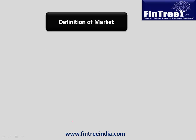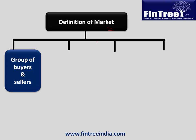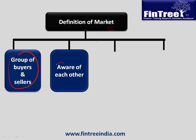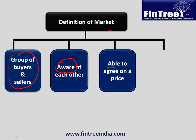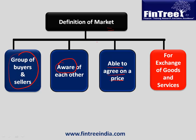Reading 16 is all about market and market structure, so it is very imperative that we understand the definition of market. A market is a group of buyers and sellers who are importantly aware of each other, are able to agree on a price, and lastly there is an exchange of goods and services — meaning ultimately there is a transaction.